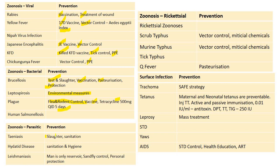KFD: killed KFD vaccine, tick control, and personal protective equipment. Chikungunya fever: vector control and PPE. Brucellosis: test and slaughter of affected animals, vaccination, pasteurization, and protection. Leptospirosis: environmental measures. Plague: flea and rodent control, vaccine, tetracycline prophylaxis QID for five days. Taeniasis: proper sanitation and careful meat slaughter. Hydatid disease: sanitation and hygiene. Leishmaniasis: sandfly control and personal protection. Scrub and murine typhus: vector control and chemical measures.